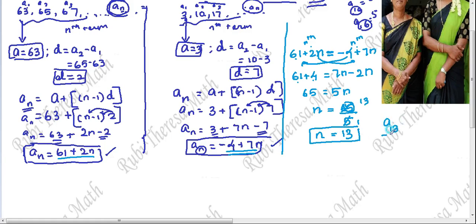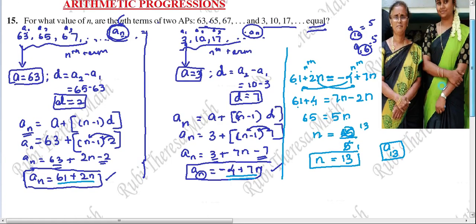The 13th term of both sequences is equal. So the final answer is: the 13th term of these two APs are equal. If you want, you can verify by substituting N equals 13 into both formulas to confirm you get the same answer.